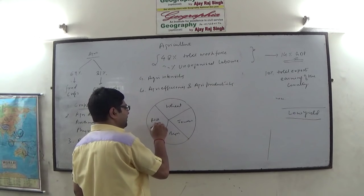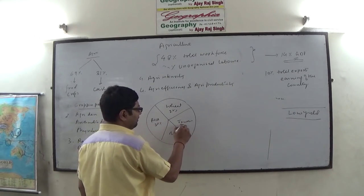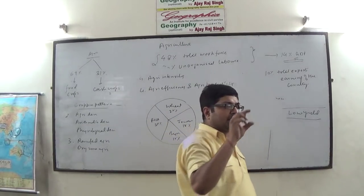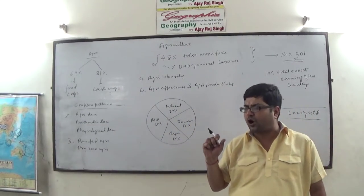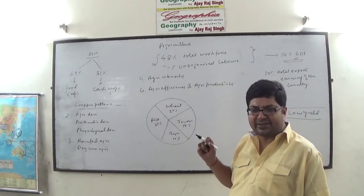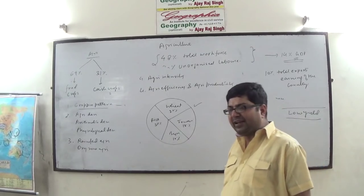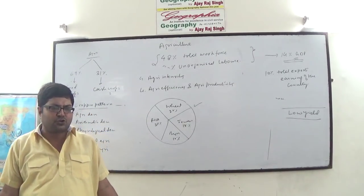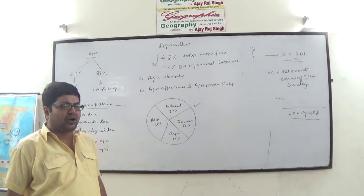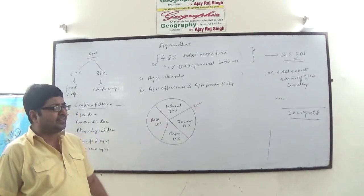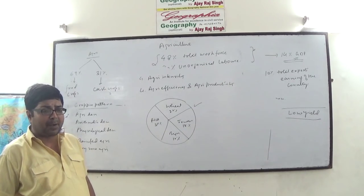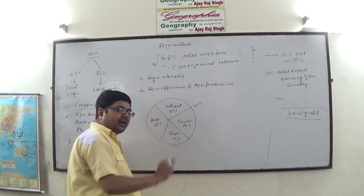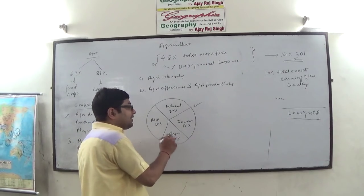For example, suppose rice accounts for 30% of land, wheat 20%, a third crop 50%, and another 10%. At any given place, at a given point of time, the proportion of land devoted to different crops refers to the cropping pattern of that region. Cropping pattern is a dynamic concept — it varies with space and time. Various agro-climatic and political factors also affect the cropping pattern; for example, if the minimum support price of any crop is increased, the area under that crop will undergo an increase.